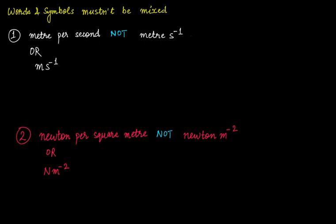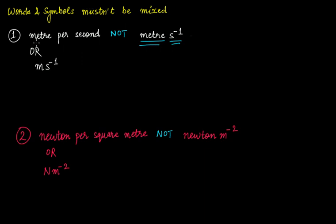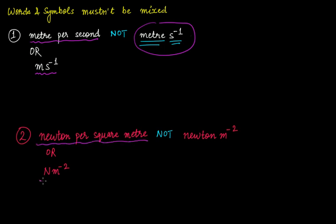Another important rule: words and symbols must not be mixed. You cannot write 'meter' as a word and then use a symbol together. For example, meter per second must be written either completely in words — 'meter per second' — or completely in symbols — 'm/s' or 'm·s⁻¹'. Similarly for Newton per square meter — either only words or only symbols, not a mixture of the two.